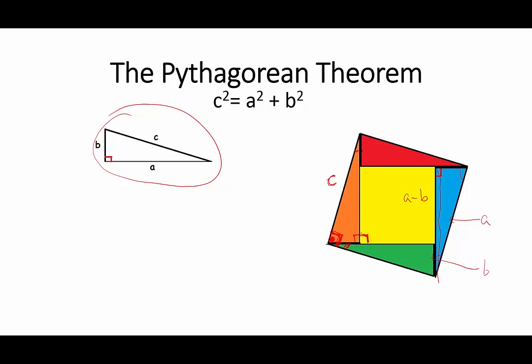So we have a square of side a minus b. Hence, the area of the large square must be equal to the area of the four triangles plus the area of the yellow square. Well, the area of the large square is c squared.